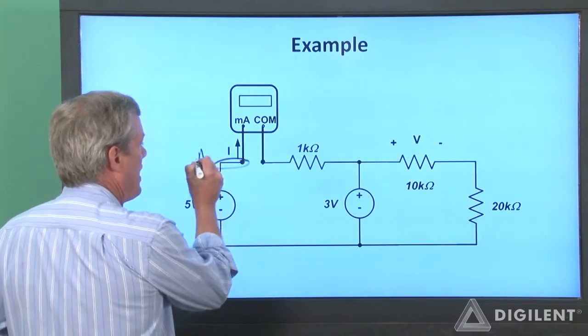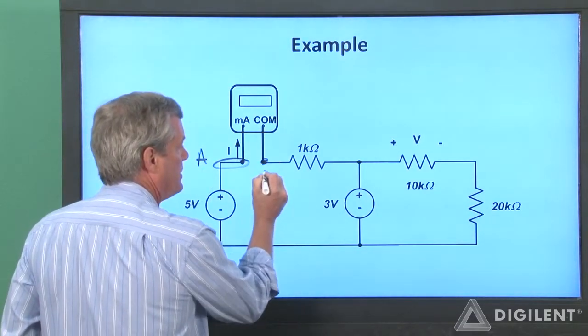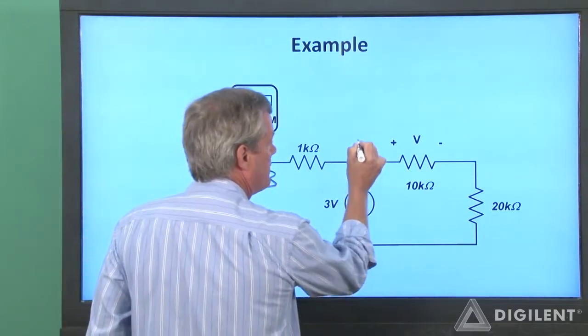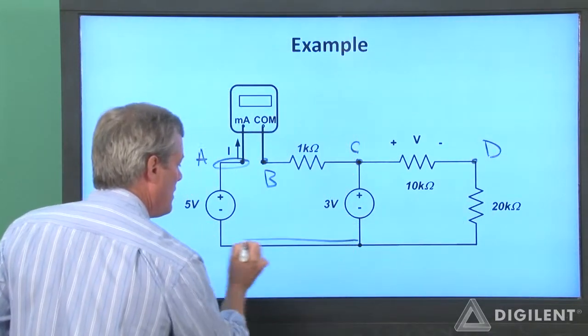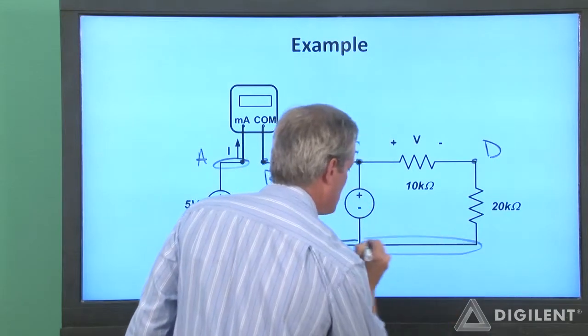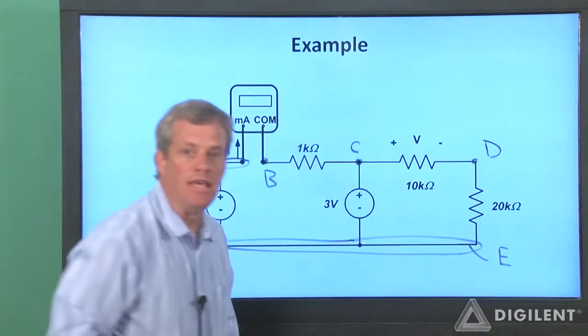I'll call this node A, this will be node B, this is C, I'll put D here, and this node will be E.